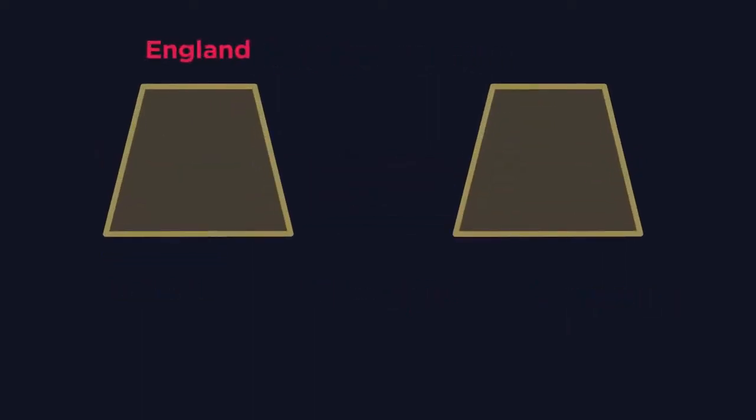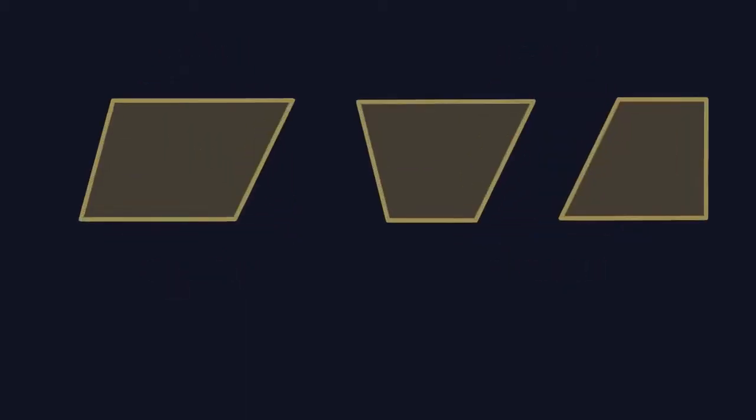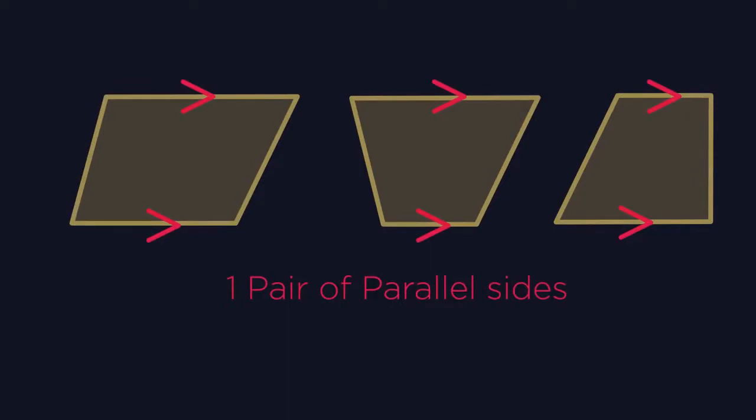In England we call them trapezians. In America they're trapezoids. They simply have one pair of parallel sides.